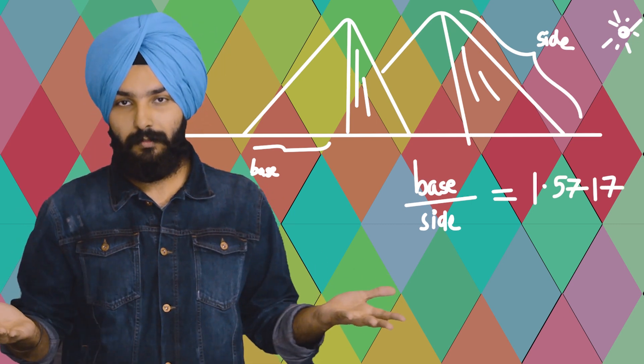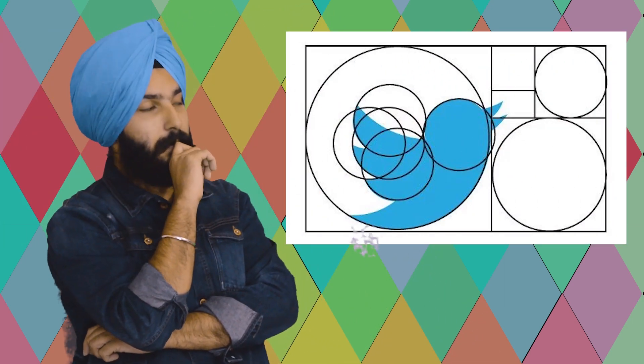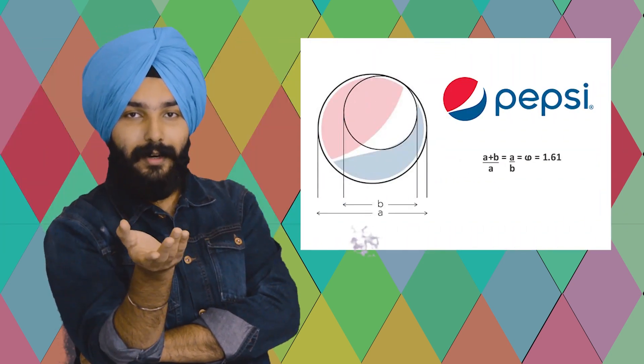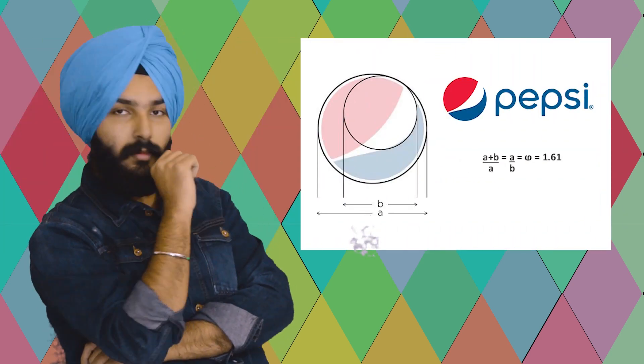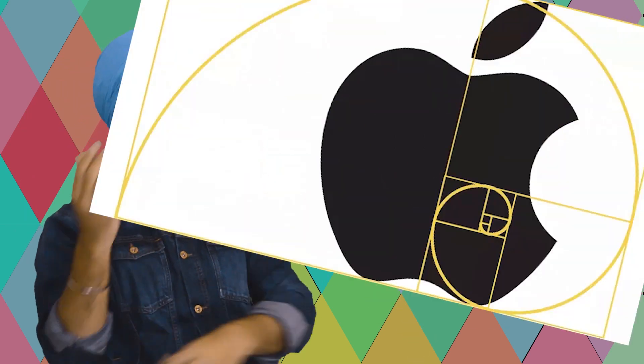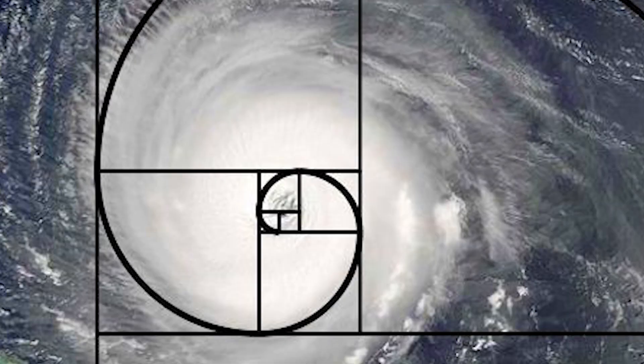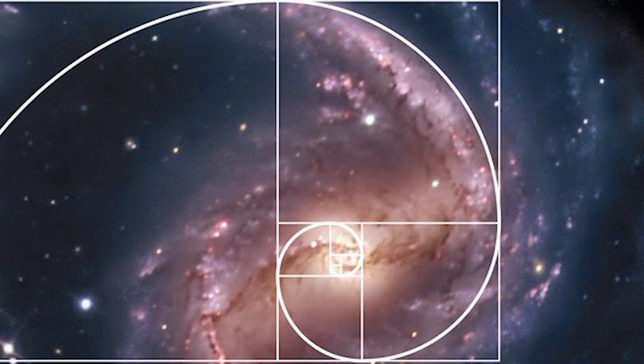This number can be found throughout nature. Which logos show it? Twitter, Pepsi, and Apple — yes, this ratio appears in their designs. And look at flowers, petals, hurricanes, spiral galaxies, and our whole universe.